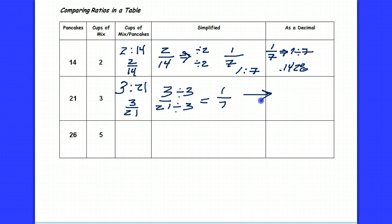And you can imagine then when I calculate the decimal value of 1 seventh, I'm going to end up with .1428. I truncated. I didn't round.